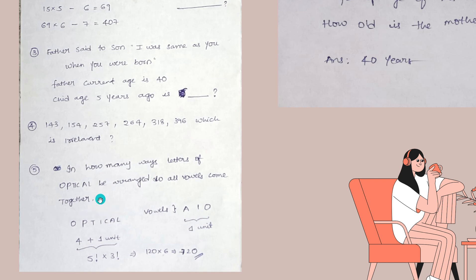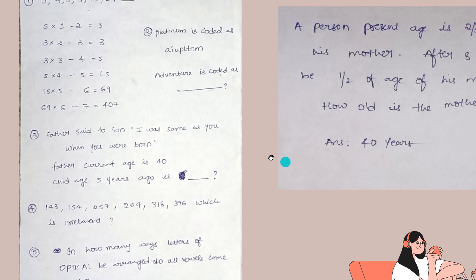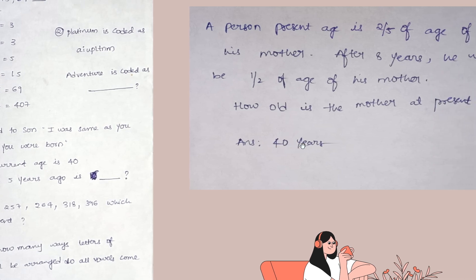See here: 'OPTICAL' - in how many ways can the letters of OPTICAL be arranged so that all the vowels come together? For this question, the vowels are A, I, O. Consider these three vowels as one unit. There are four consonants and three vowels. Since they ask to put all vowels as one unit, consider it as one unit plus four consonants equals five units. So 5 factorial times 3 factorial (since the vowels can be arranged among themselves in 3 factorial ways) gives 720.